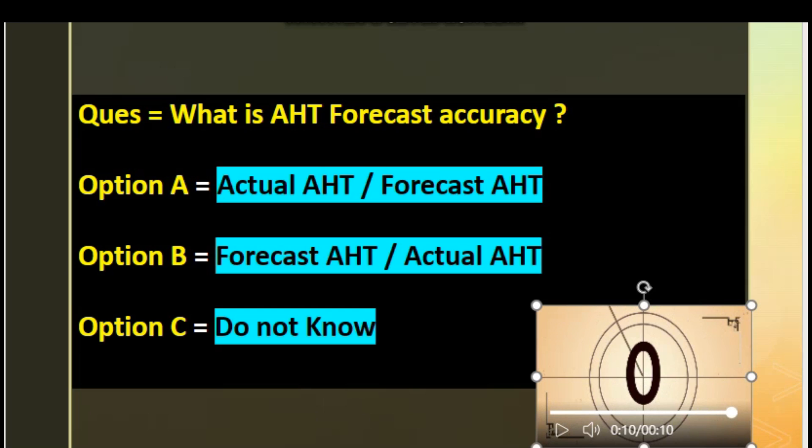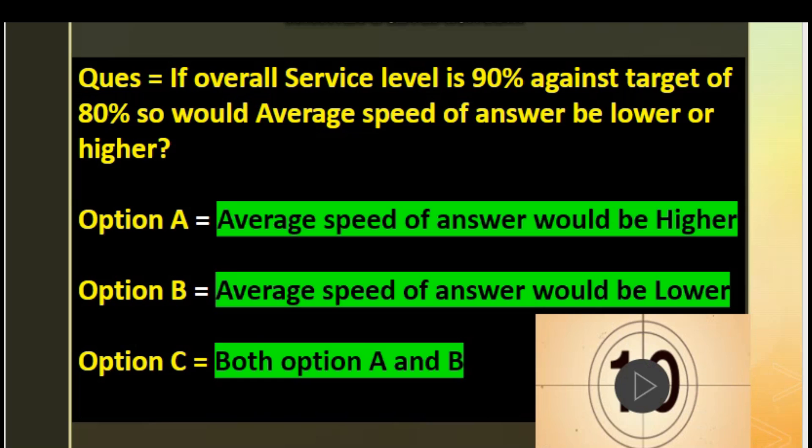The correct answer is Option A: actual HD divided by forecast HD.